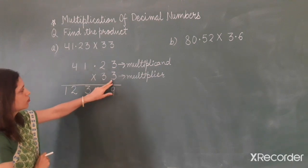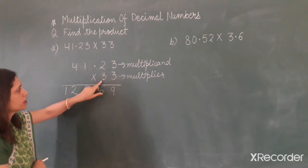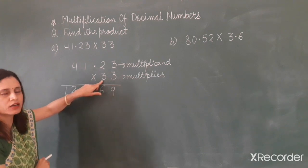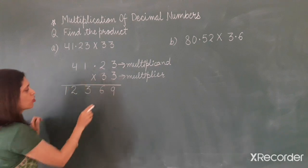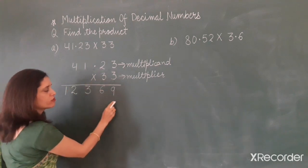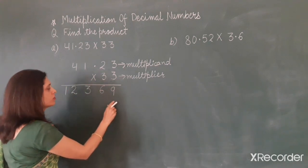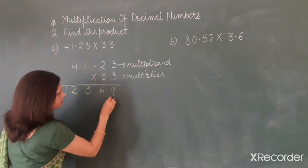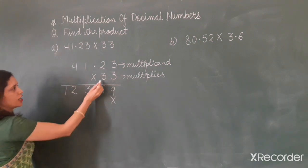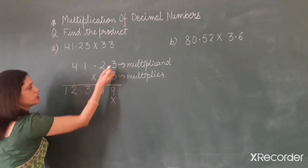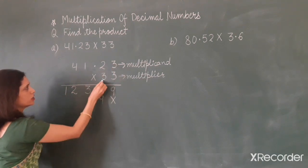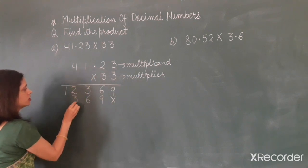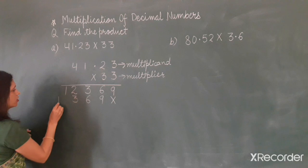Now come to the next digit. Here three is at the tens place, so we will start writing the answer from the tens place. At the ones place, either we will put a cross or we will put zero. Then multiply by three: three threes are nine, three twos are six, three ones are three, three fours are twelve.